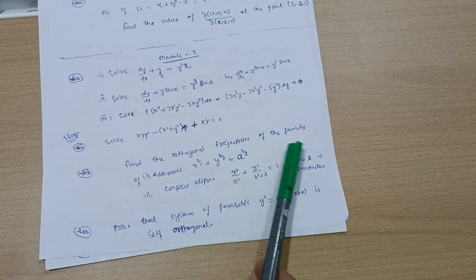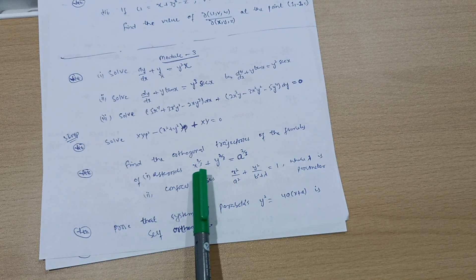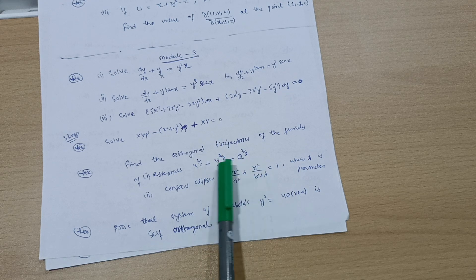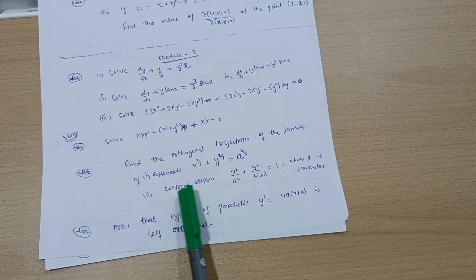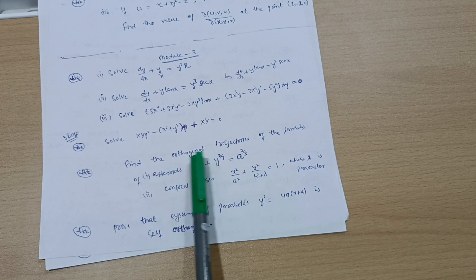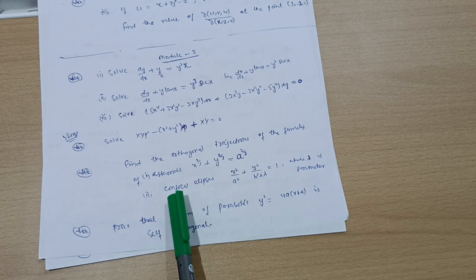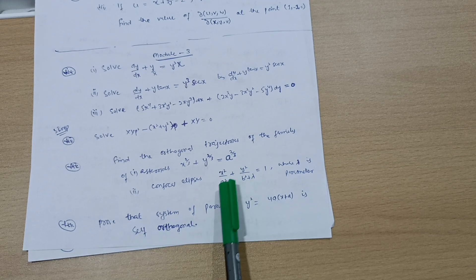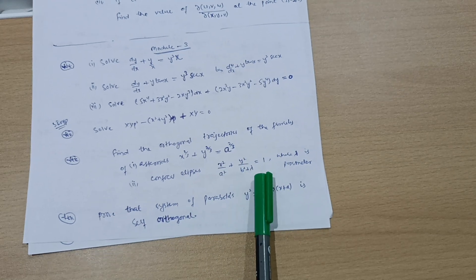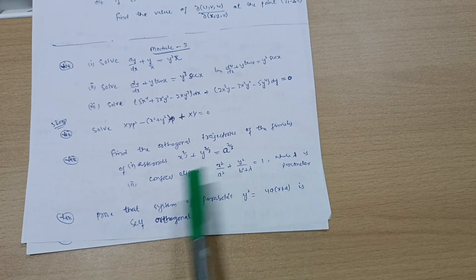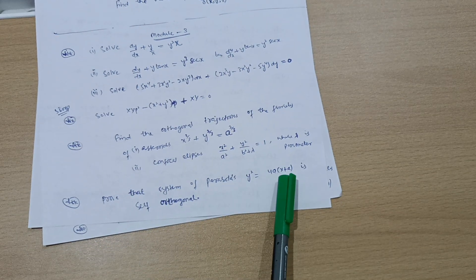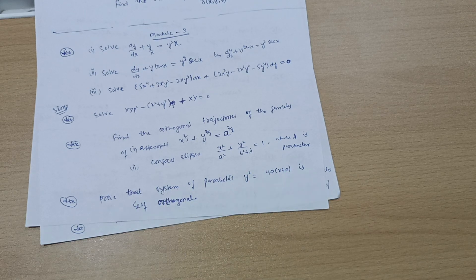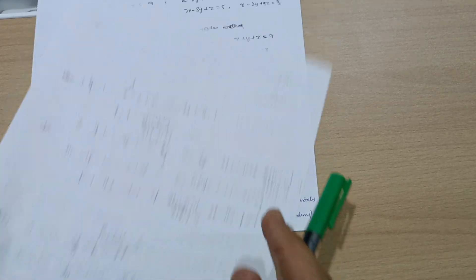Solve xyp squared minus (x squared plus y squared)p plus xy equals zero. Find the orthogonal trajectories of the family of asteroids x to the power 2/3 plus y to the power 2/3 equals a to the power 2/3. Find orthogonal trajectories of confocal ellipses x squared by a squared plus y squared by (b squared plus lambda) equals 1 where lambda is the parameter. Prove that system of parabolas y squared equals 4a(x plus a) is self-orthogonal. This is all about Module 3.